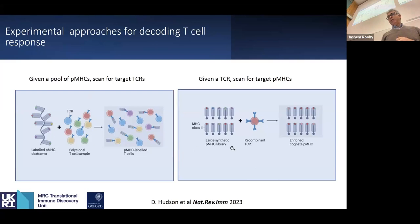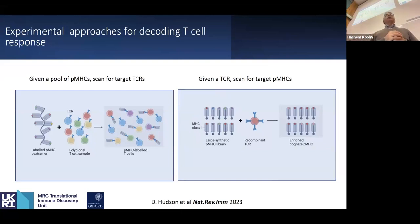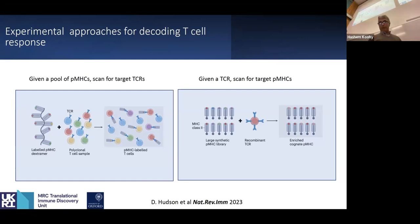On the other hand, if we know the TCR of interest and want to see which antigens they are targeting, we can use different approaches. One good example is the combinatorial synthetic yeast display approach, where you can synthetically generate all possible 9-mers or 10-mers, attach them to an HLA molecule of interest, and then identify those presented by your TCR of interest. This is very powerful because down the line you can do computational and mathematical modeling to identify common features of targets for the peptide-MHCs and use those to predict future targets.